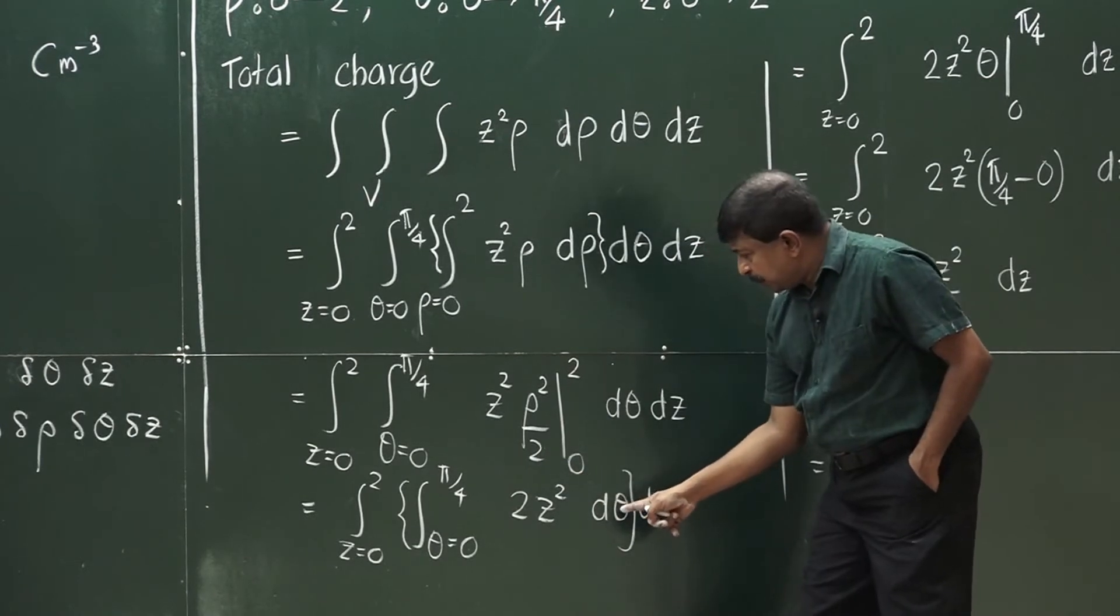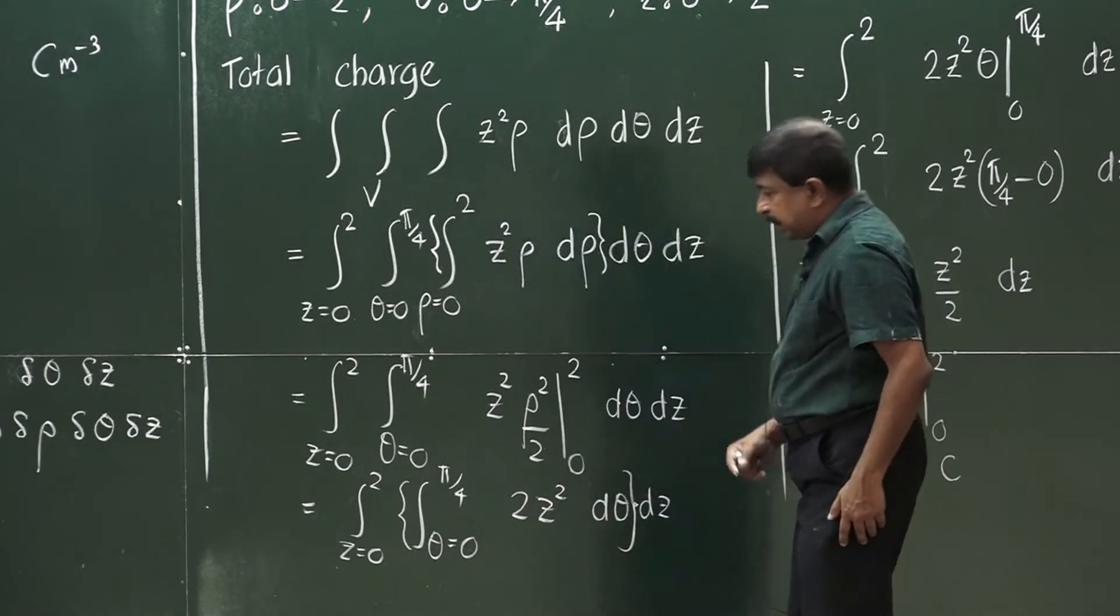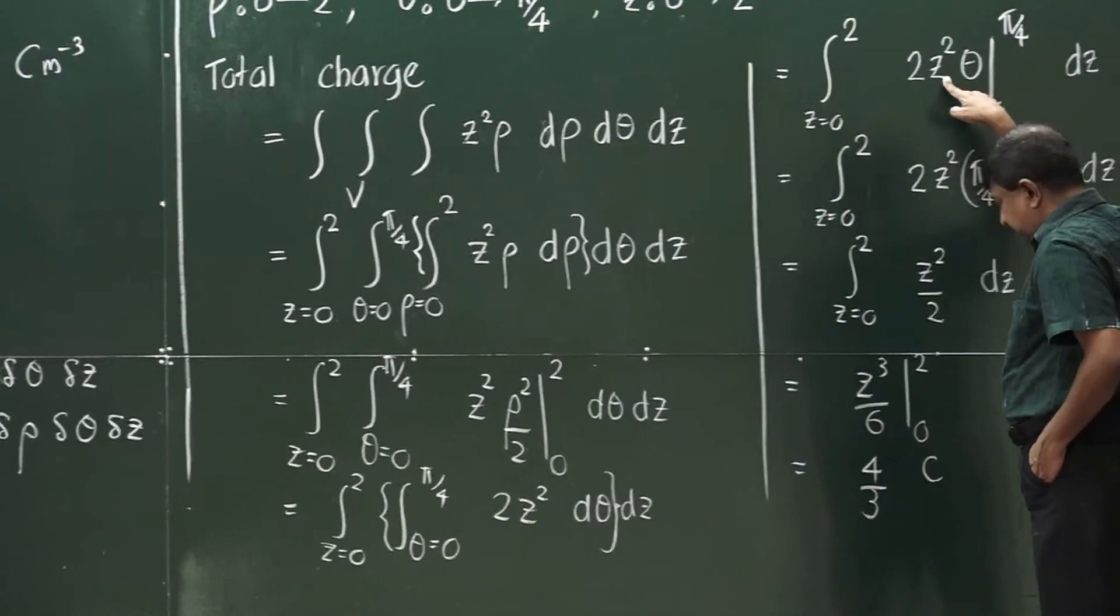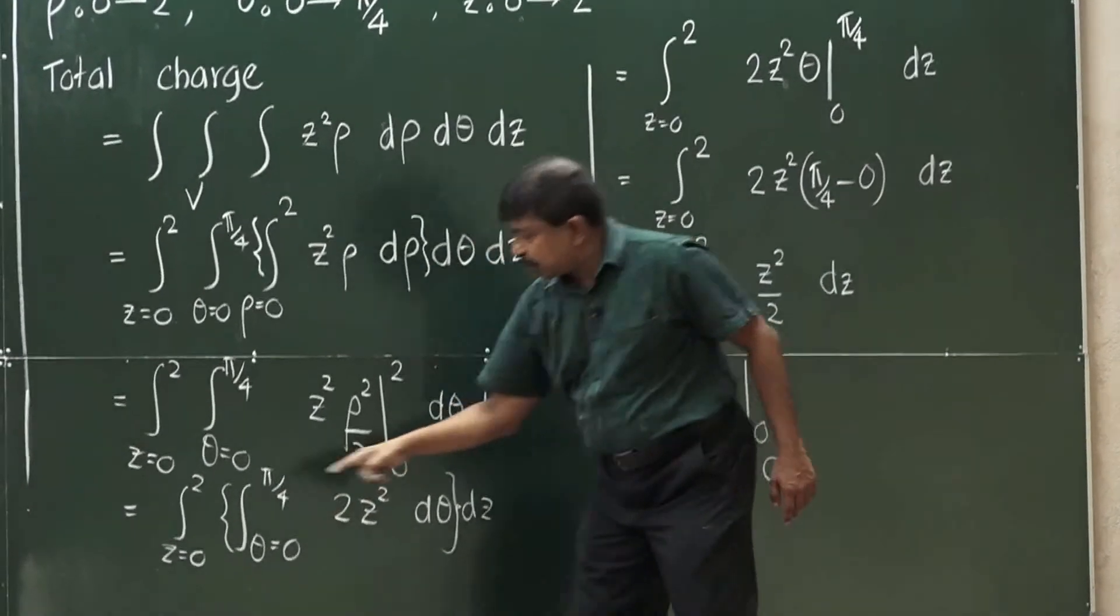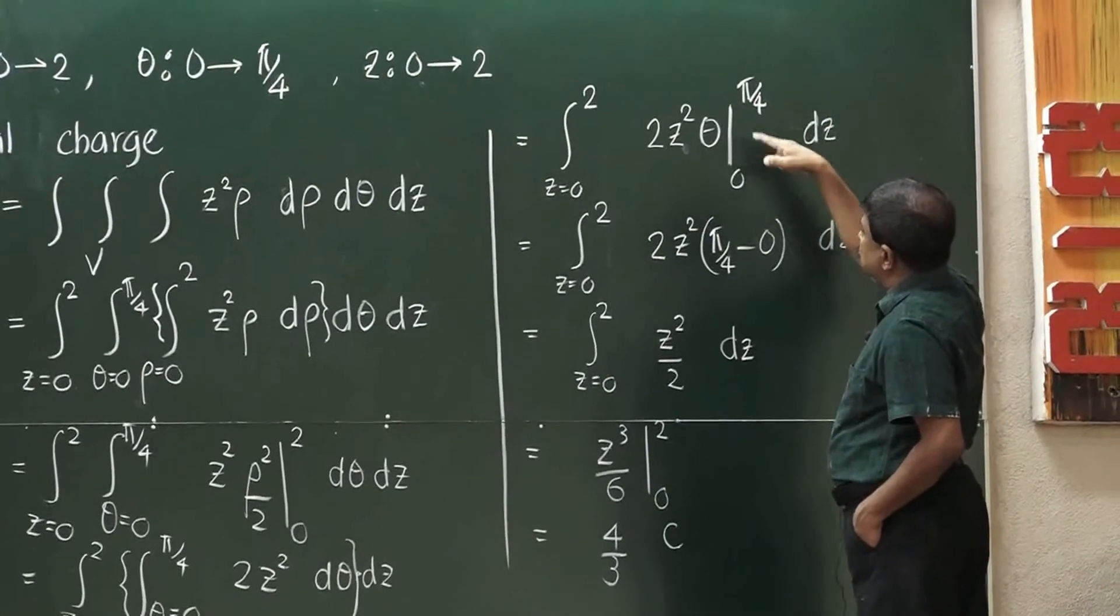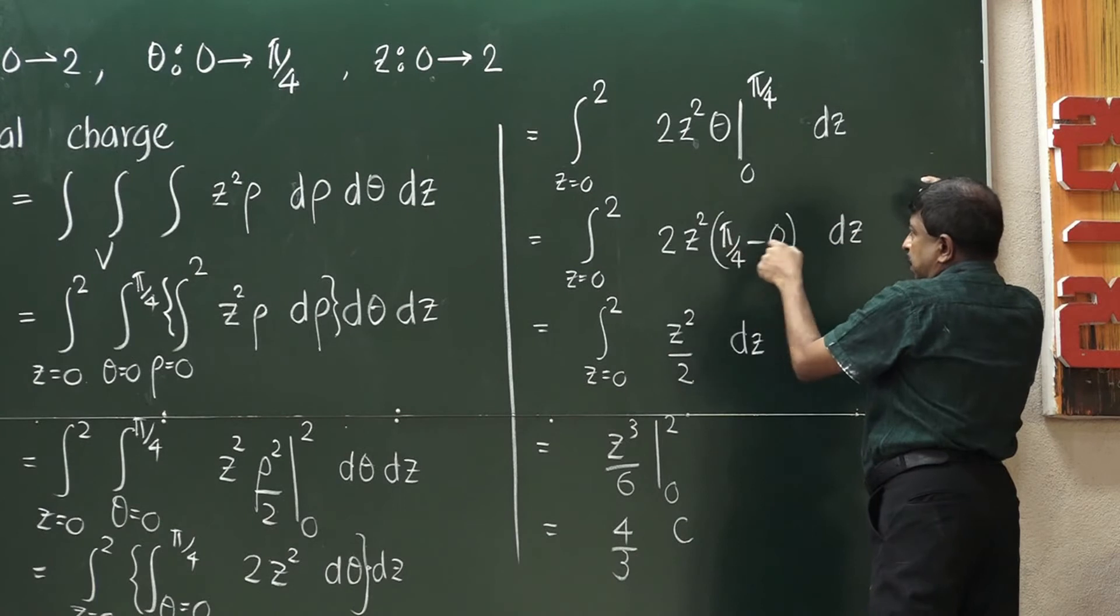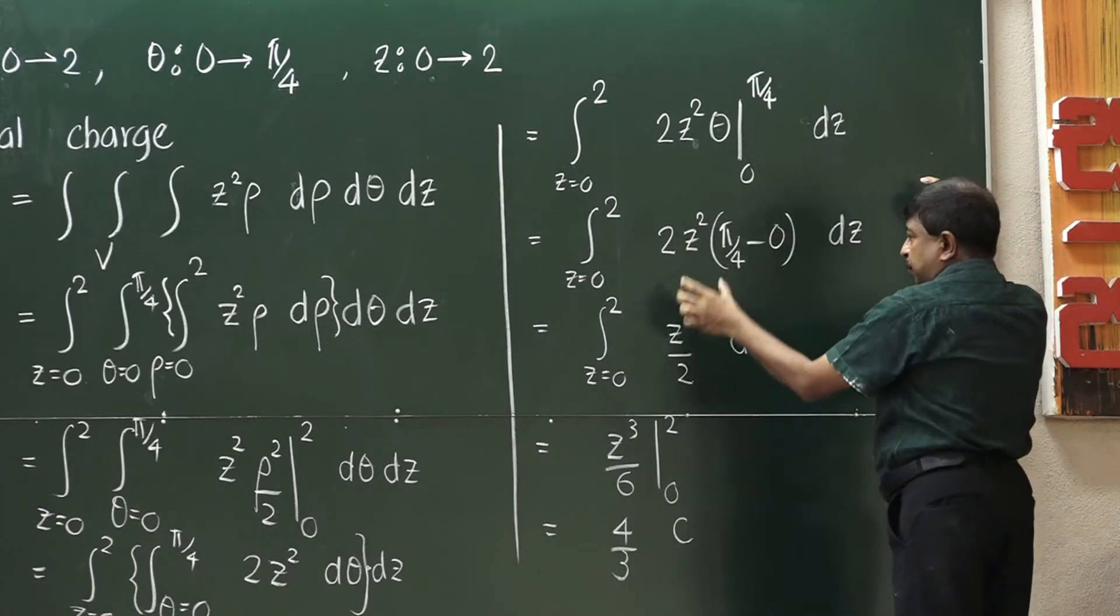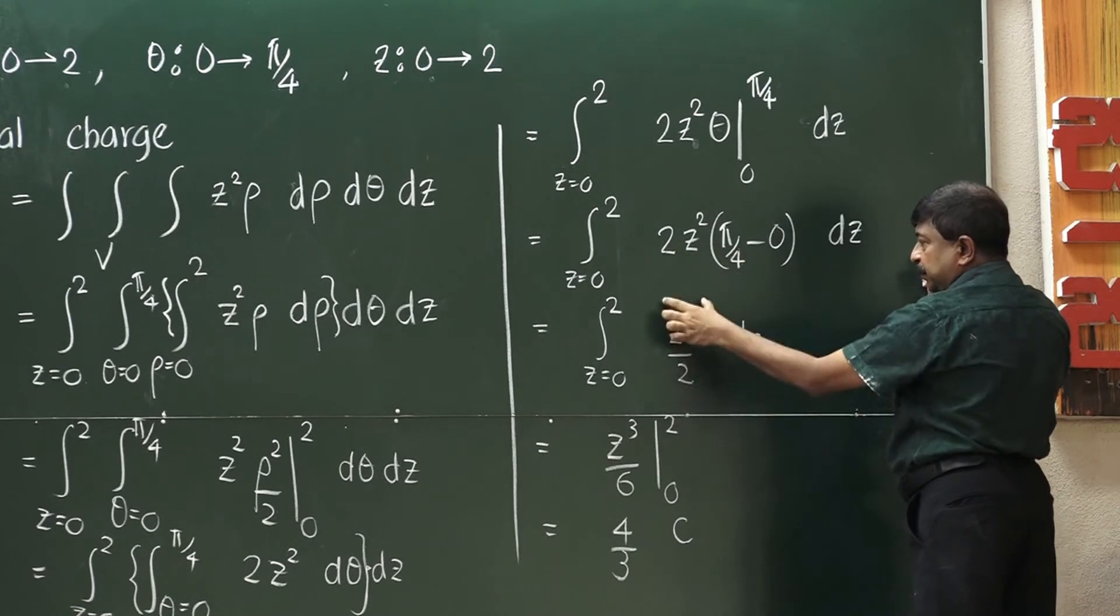The variable of integration is theta. So, 2 z squared times theta is what you get. As you saw, the limits are from 0 to 5 by 4. We will plug in those limits. So, here you get 5 by 4 minus 0 which is 5 by 4 and then these two will go away. So, you have this one.